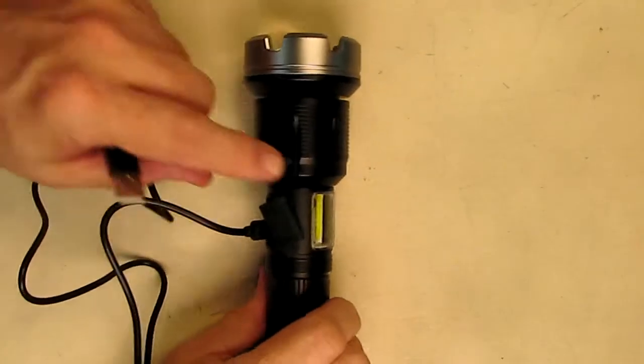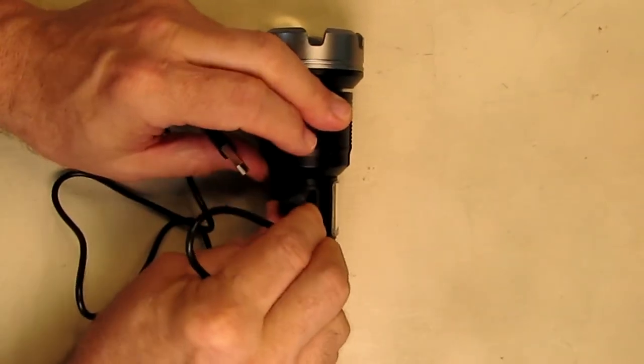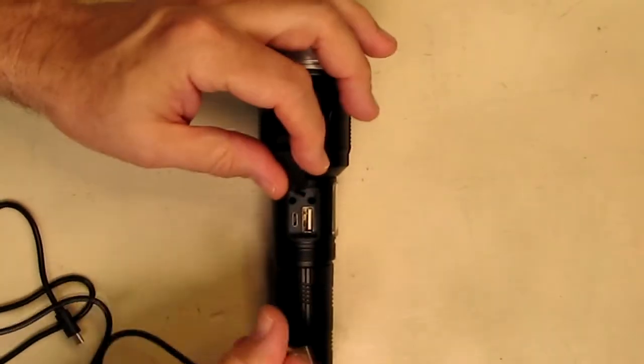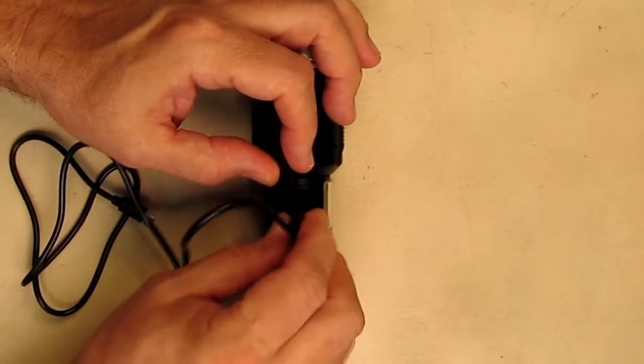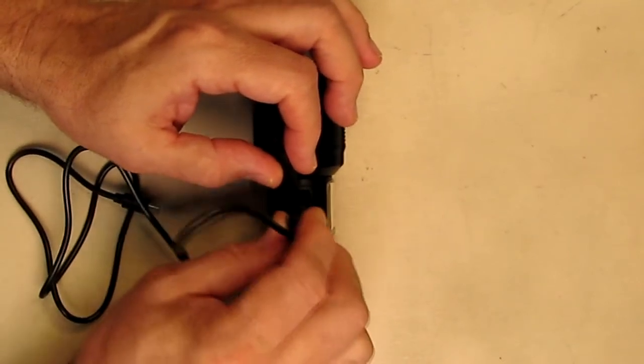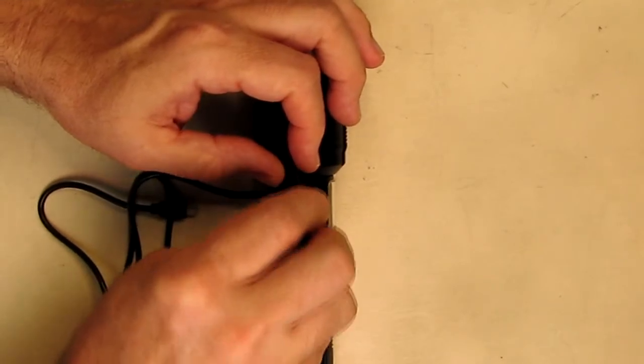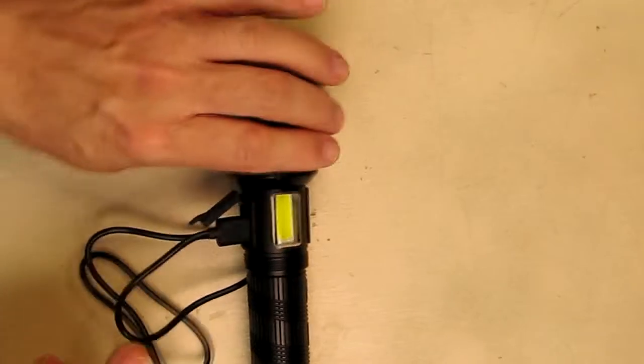If you want to charge another device, it's really simple to do. You take the included cable, remove the silicone sleeve right there, and then you have a USB A port on the device. You plug it in like that. The flashlight doesn't have to be on.